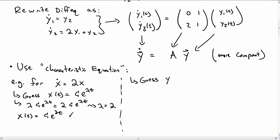So let's do the same thing here. Let's make a guess y vector of t is some constant vector y naught e to the lambda t. Again, this vector y naught here is just some constant vector that we're going to figure out later. On the left-hand side we get lambda y naught e to the lambda t. On the right-hand side we get A y naught e to the lambda t.